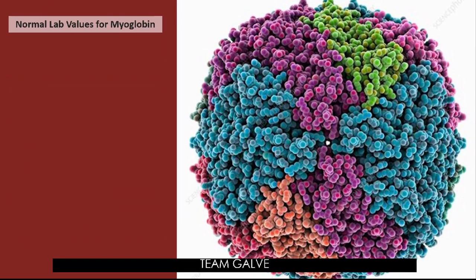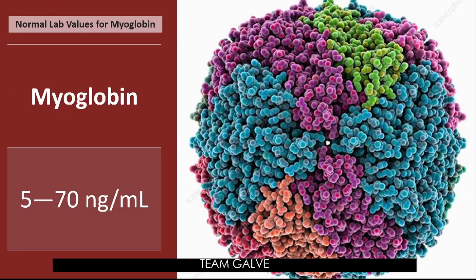The normal value of myoglobin is 5 to 70 nanograms per milliliter. If the level is above 70, the patient may be having an MI. Board exam tip: the earliest cardiac marker for MI is myoglobin, because it rises 2 to 4 hours after MI.